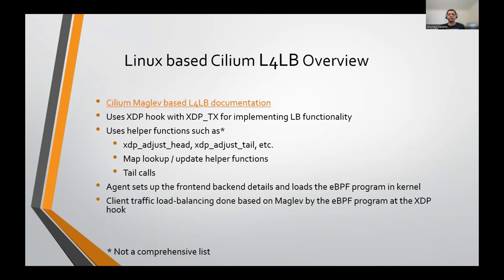Apart from the eBPF program which implements the core LB functionality, the Cilium solution also consists of a user mode CLI and an agent which compiles, loads, and attaches the eBPF program in Linux. This agent and CLI is also responsible for taking service details as input and configuring the required front-end and back-end details in the eBPF maps.